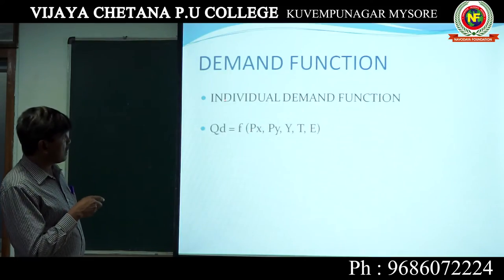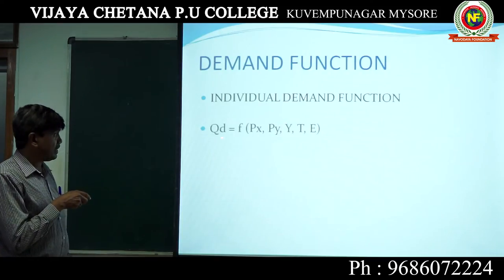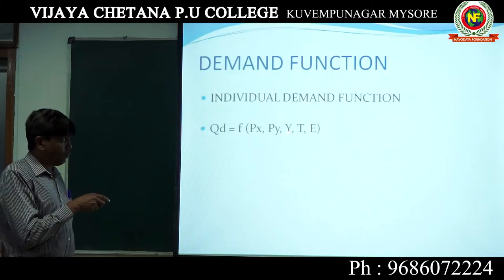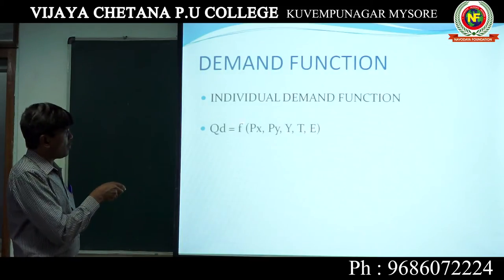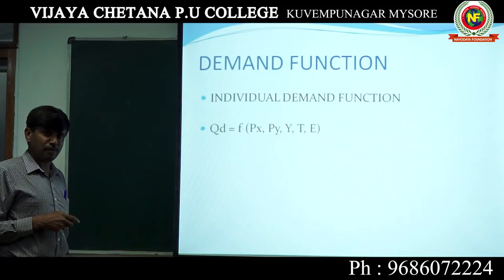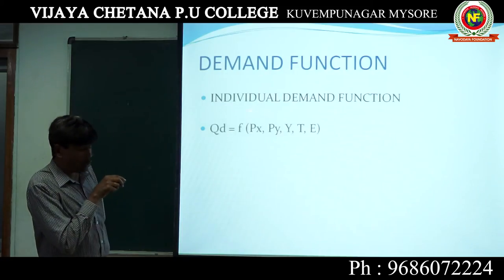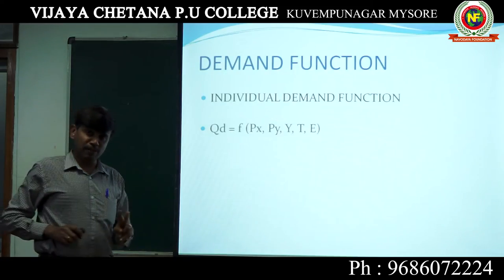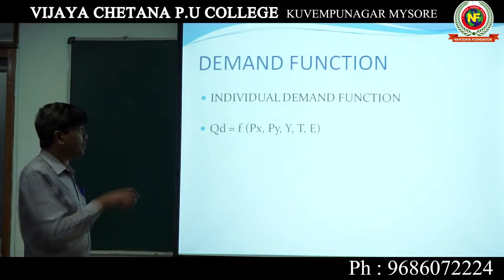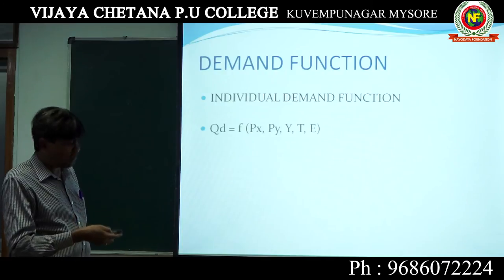While writing the demand function, you have to consider all these factors. Quantity demanded is a function of Px, Py (or PR), Y, T, E. These are all the factors which affect the demand of a particular good. This is the demand function — particularly individual demand function. There are two demand functions: individual demand function and market demand function.